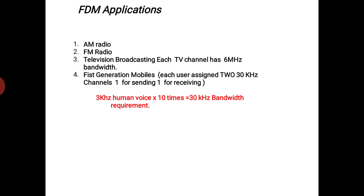Next are the applications of FDM — frequency division multiplexing. First is AM radio, as mentioned earlier. FM radio operates from 88 megahertz to 108 megahertz. AM radio band is 760 kilohertz to 1140 kilohertz. The individual channels in AM radio differ by a guard band of 10 kilohertz, calculated as twice the human voice frequency of 5 kilohertz. So a 10 kilohertz minimum gap is maintained between two channels in AM radio.